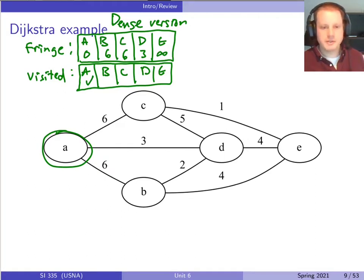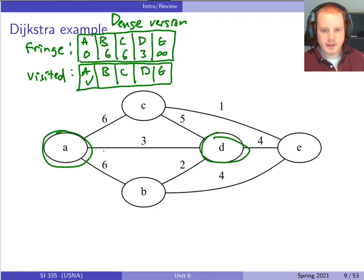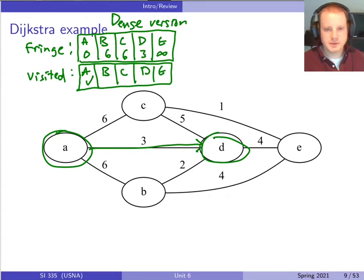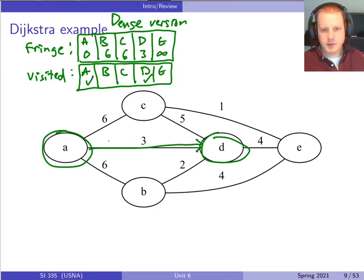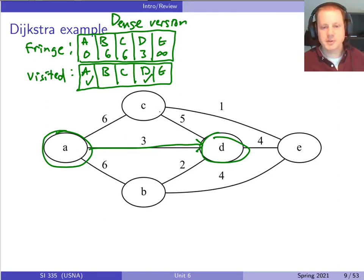We proceed by checking all nodes that haven't been visited yet — B, C, D, E — checking their current distances in the fringe and taking the smallest one. Right now D fits that criteria, so we visit D next. Notice this proceeds exactly the same way as the other Dijkstra's algorithm, just using data structures differently. We mark D as visited — basically a boolean set to true — and update all the neighbors of D. For A, already visited, we skip it. For C, we're looking at three plus five.